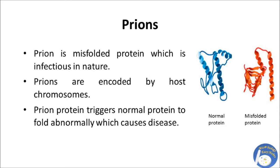Prions are misfolded proteins which are infectious in nature. Prions are encoded by host chromosomes. The prion protein triggers normal proteins to fold abnormally, which causes disease.